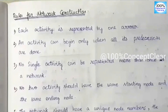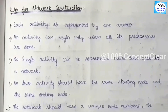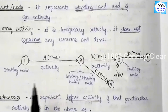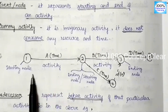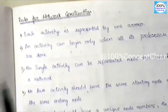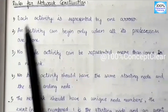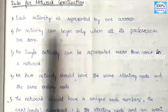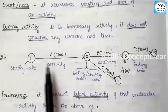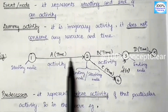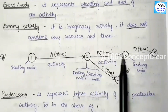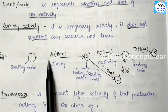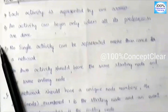Next, we discuss the rules for network construction. The first rule is: each activity is represented by one arrow mark only — one arrow mark represents only one activity. Here A, B, C, and D each have their own single arrow mark.